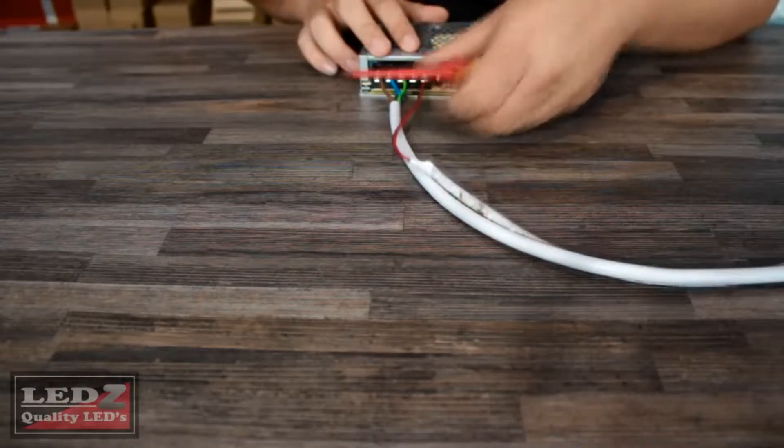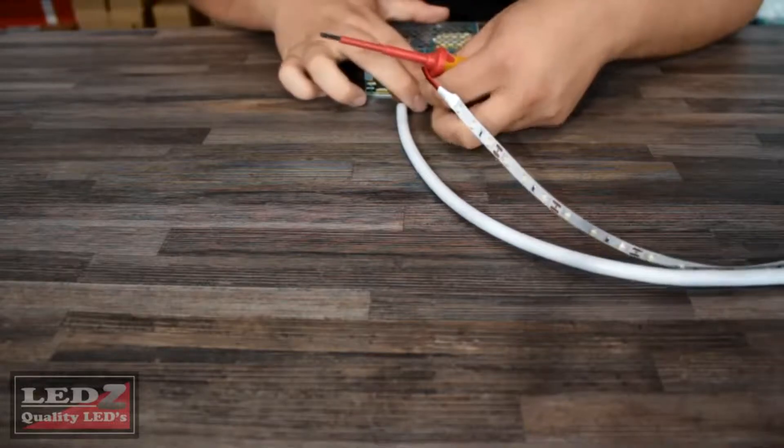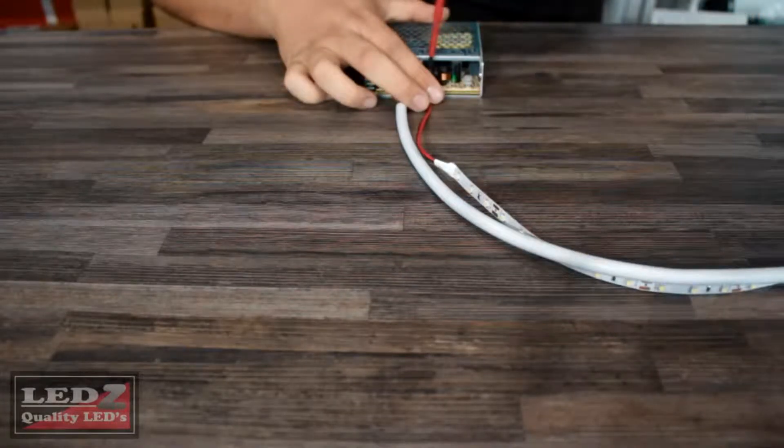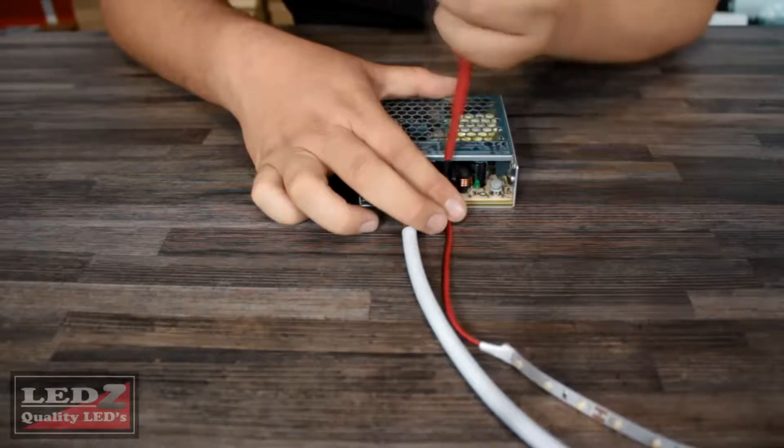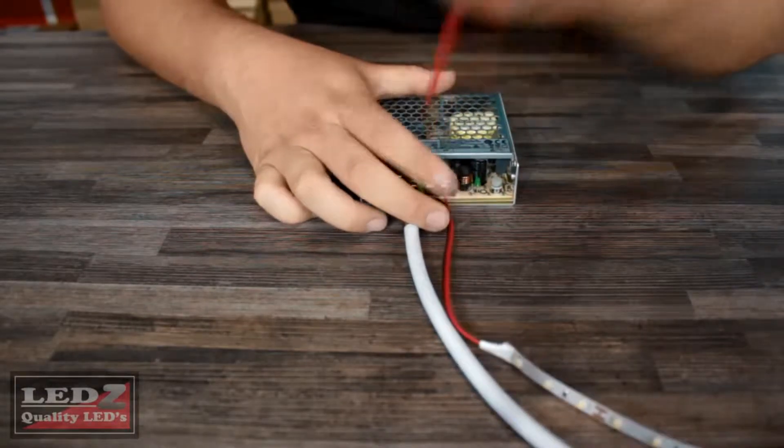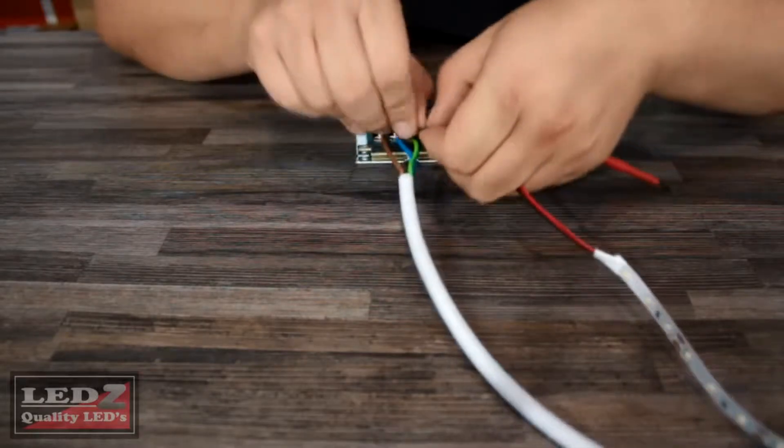And then once that's tightened, you're going to do the V negative screw and you're going to take the black cable and you're going to insert it under that pad, tightening that up as well and making sure that both of your V negative and V positive are tightly secured.